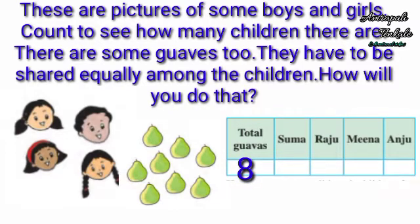Total guavas are 8. So we will give one turn by one. Each one gets this process done twice, so they got 2 guavas each.